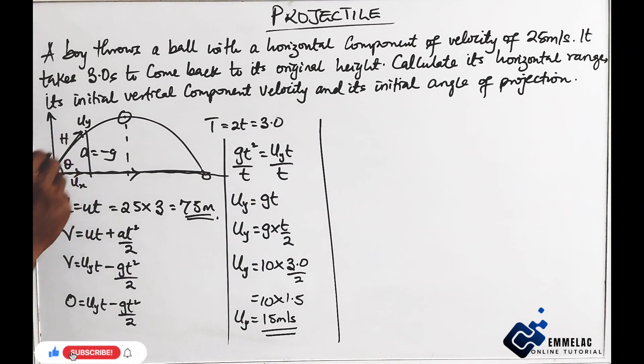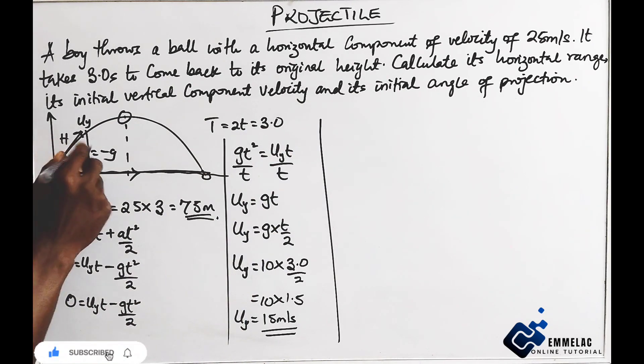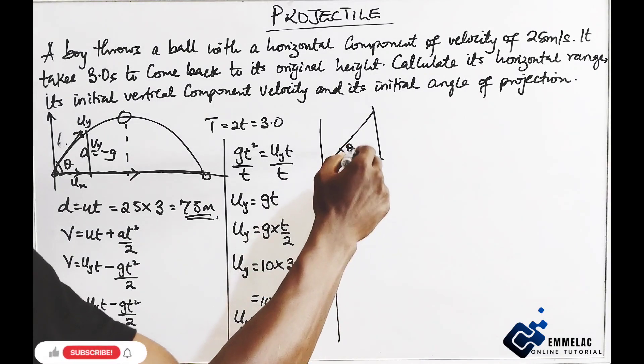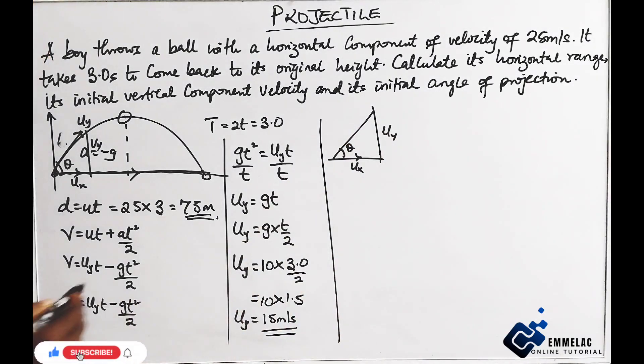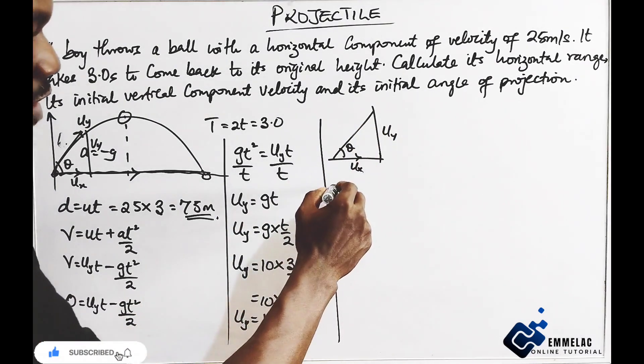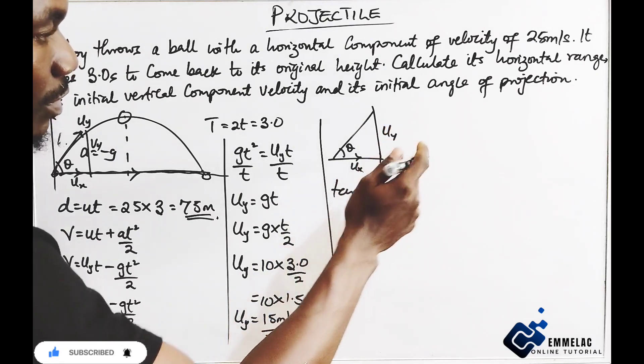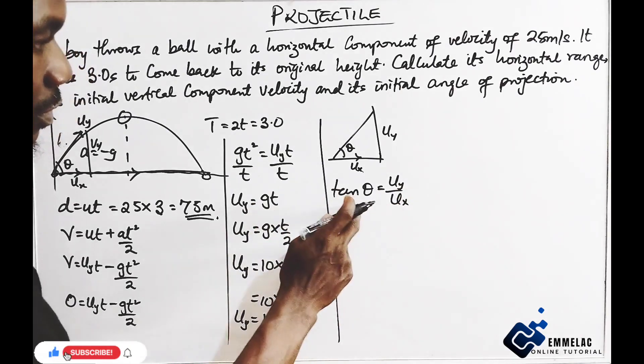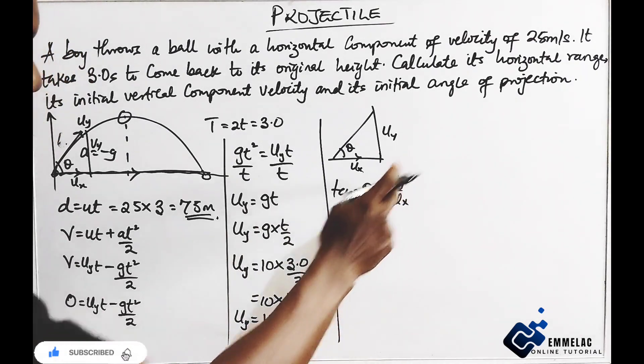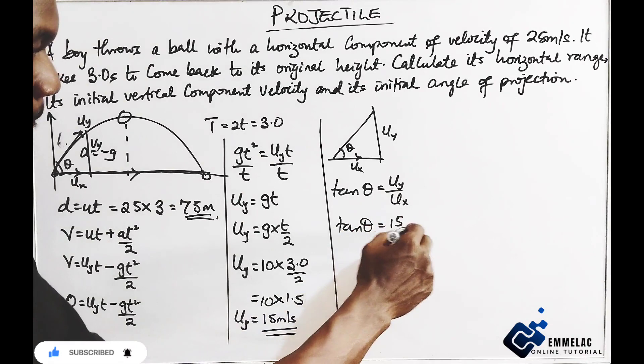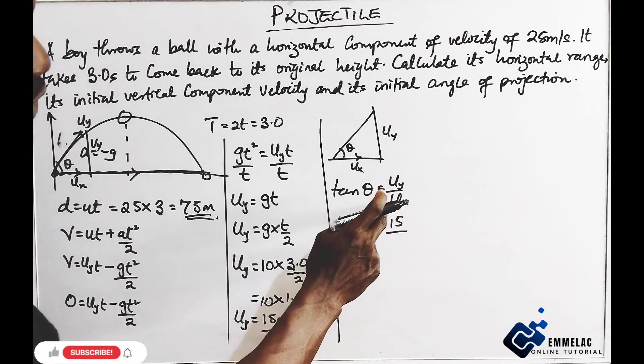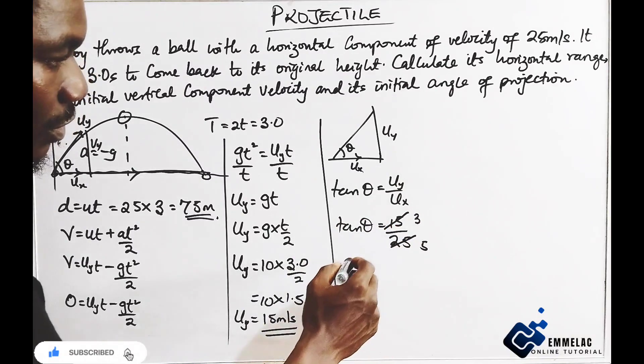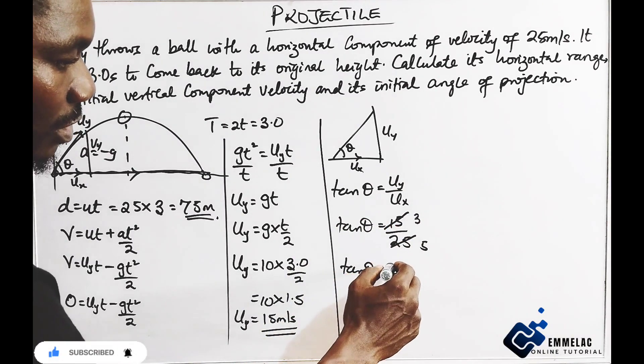Let me just draw the diagram here. Vertical component, so this against this. So here you have tan theta equals opposite over adjacent. U sub Y is 15, then over U sub X, that is the horizontal component. Here we are 25. So here we have tan theta equals 0.6.